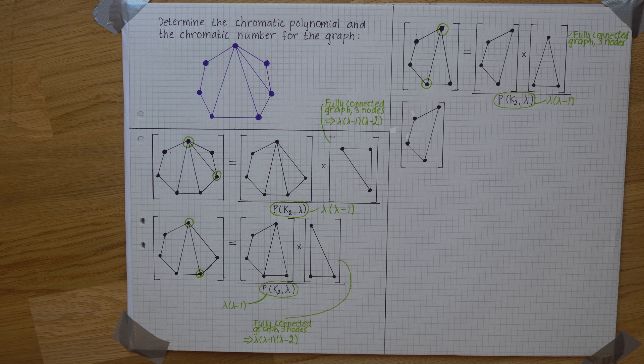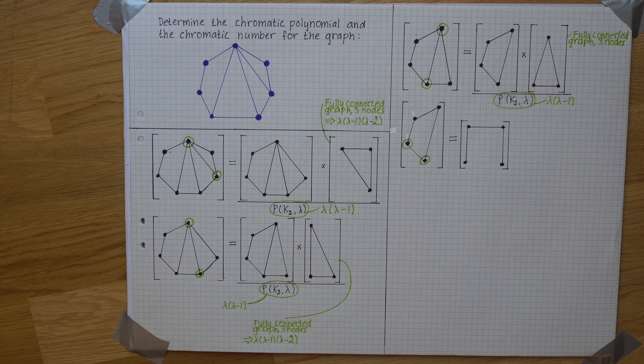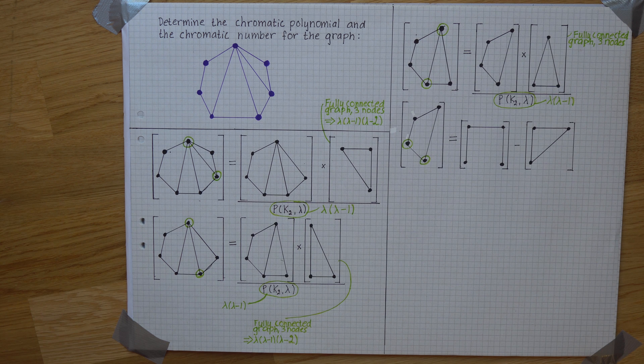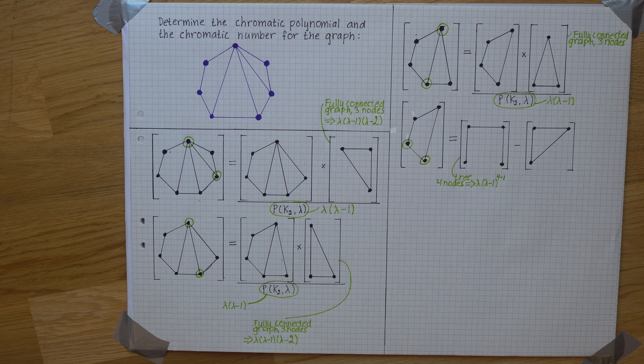We will deal with this by removing the connection between these two nodes. That is allowed if we then subtract the very same graph, but with those two nodes conjoined instead. This is a tree with four nodes.